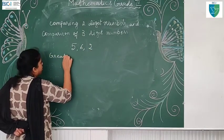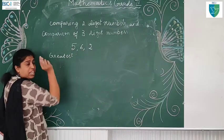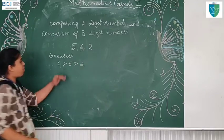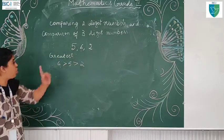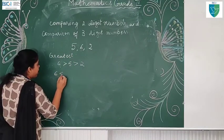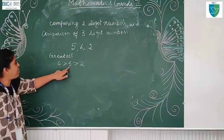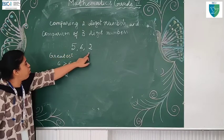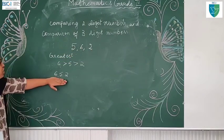Greatest: we have to arrange in descending order. Which is the biggest? Six — six is greater than five, and five is greater than two. So first write six, next smaller is five, next smaller is two. What is the greatest number we can make from 5, 6 and 2? Six hundred and fifty two. Six is in hundreds, five in tens, two in ones — six hundred and fifty two is the greatest number.